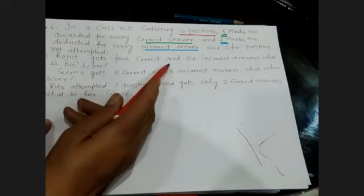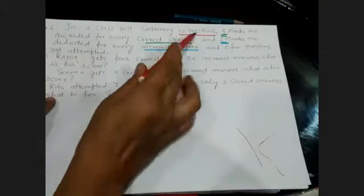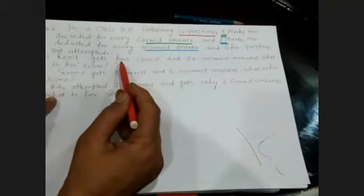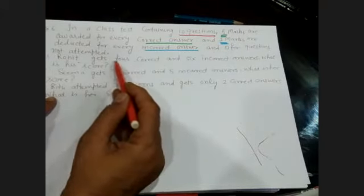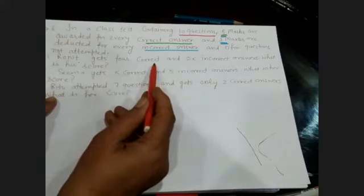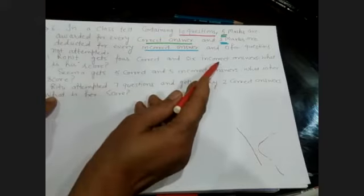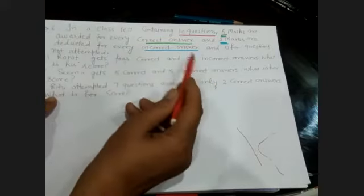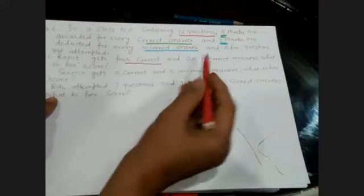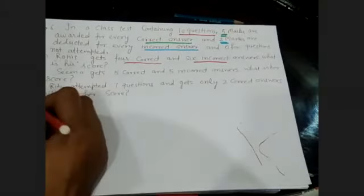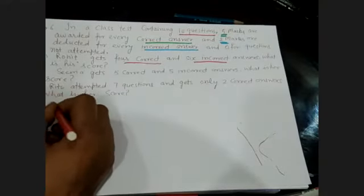First question: Rohit gets 4 correct and 6 incorrect answers. Rohit attempted all 10 questions — 4 correctly and 6 incorrectly. The solution for the first part: Rohit gets 4 correct questions.